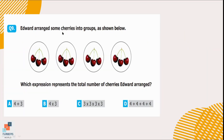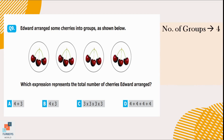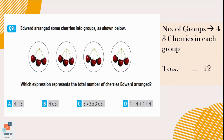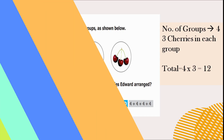Question number 9. Edward arranged some cherries into groups. Which expression represents the total number of cherries Edward arranged? We can see there are 4 groups in total, with 3 cherries in each group. To find the total, we multiply the number of groups by the number of cherries in each group. So, 4 multiplied by 3 equals 12. Option B is the correct answer.